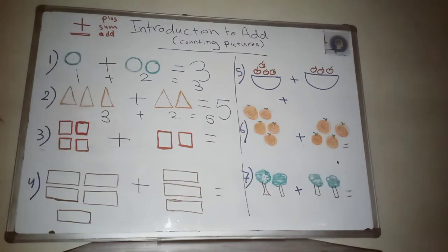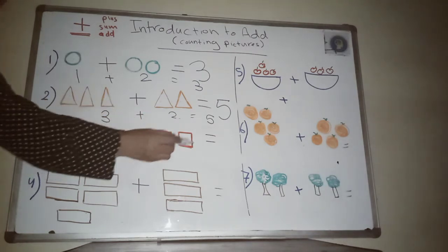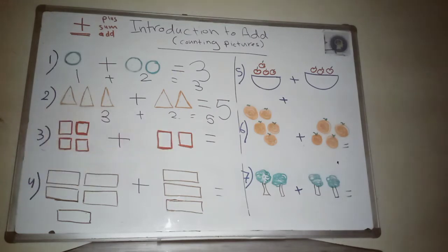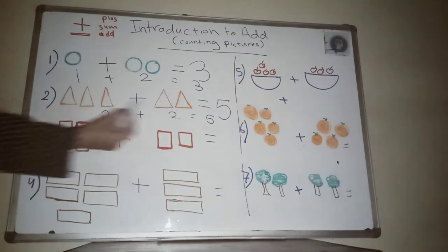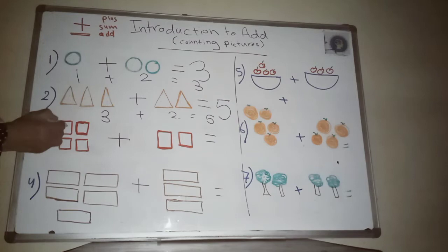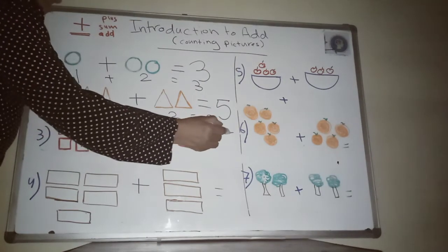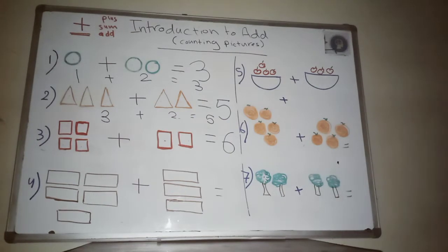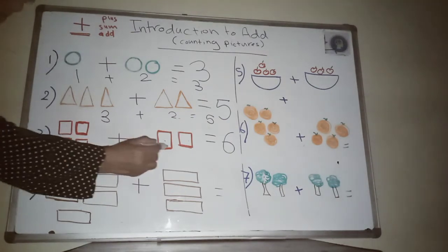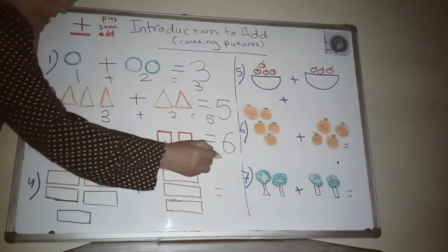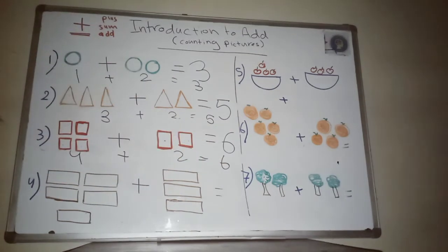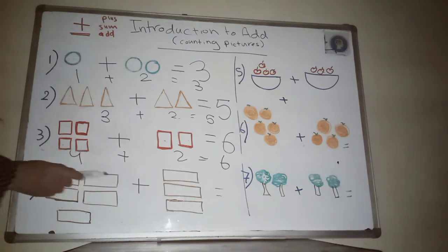Another example: I have four squares and two more squares. How many squares do we have? Let's count — one, two, three, four, five, six. I have six squares. Four plus two equals six.